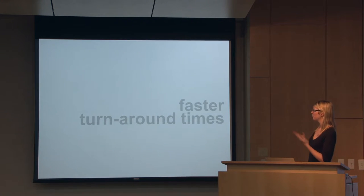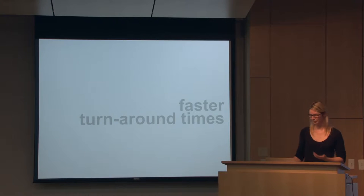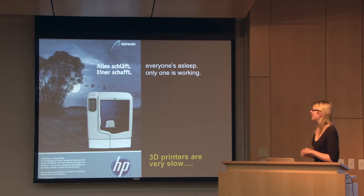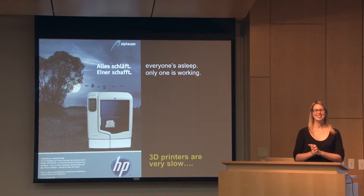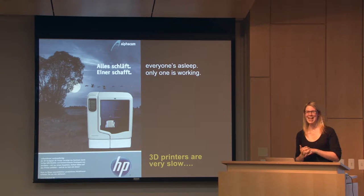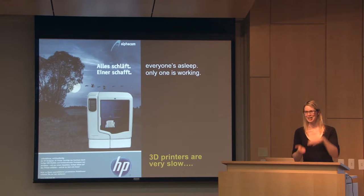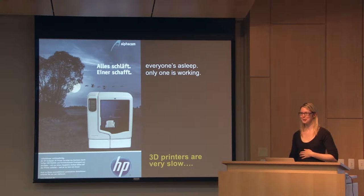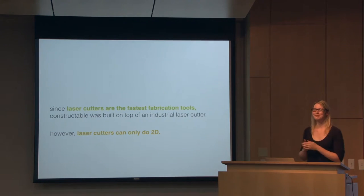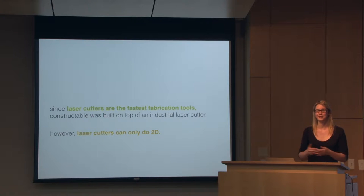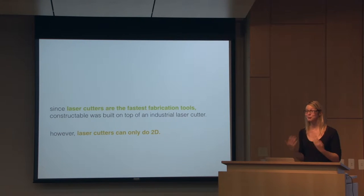Direct manipulation really requires faster fabrication because you don't want to wait overnight — you want physical feedback after every step. I brought this funny German advertisement showing a 3D printer that says 'everyone's asleep, only one is working.' A small object this size can easily take 12 to 14 hours. 3D printers are really too slow for this. This was also the reason the Constructable system was based on a laser cutter because they are really fast. But laser cutters can only cut 2D, so we asked ourselves: is there a way to use laser cutters to make 3D objects?